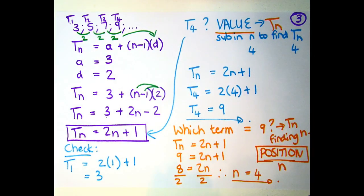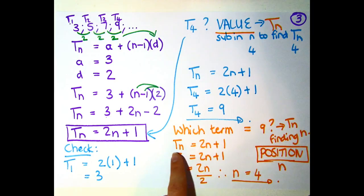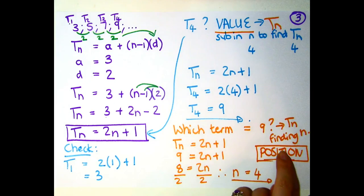When they phrase it differently and they say which term, that means they're asking for your n value. They'll say which term equals 9 in this example, which means 9 goes into your Tn, and then you put the rest of the formula in and you solve for n. Because when they say which term, they're asking for the position.